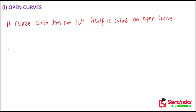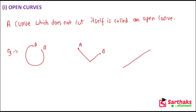For example, we can have this shape — starting from point A, stopping at point B, and it does not cut itself. This is an open curve. Similarly, another open curve starts and ends at different points without cutting itself. A straight line segment AB is also an open curve because it does not cut itself at any other point.